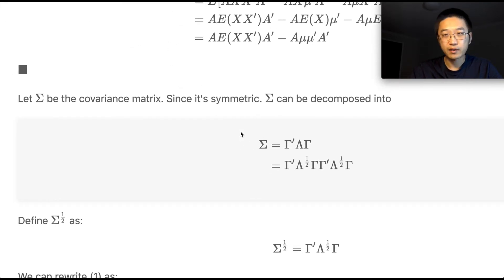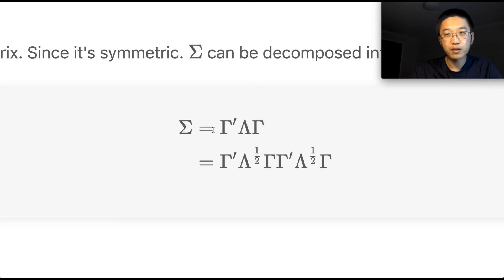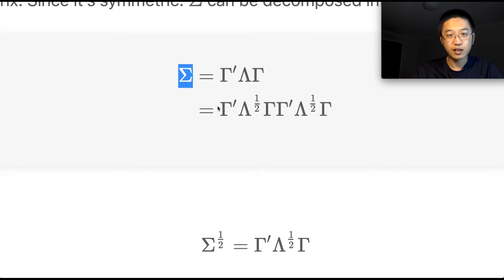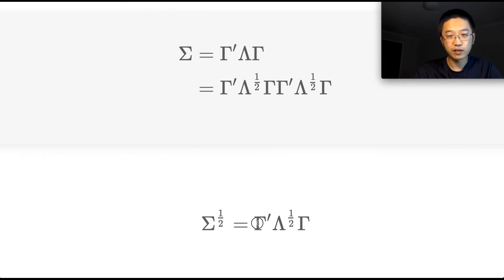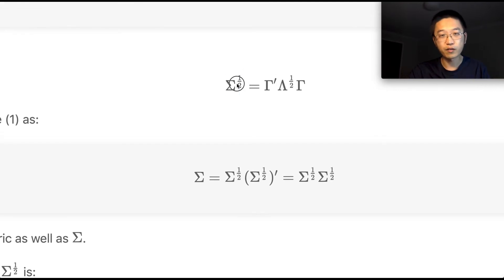When we talk about random vectors, we need to talk about the covariance matrix. Let's suppose sigma is a covariance matrix. Since it is symmetric, from linear algebra we know we can decompose it into an orthonormal matrix gamma, where each column of gamma is an eigenvector of sigma. Lambda is a diagonal matrix where each term on the diagonal is an eigenvalue of sigma. Sigma can also be written as a square, so we can find the square root of sigma in this form.